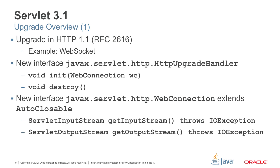Let's take a look at the second category of features, namely upgrade. Upgrade is something defined much earlier in HTTP 1.1, and the most famous example of upgrade is WebSocket. In Servlet 3.1, we provide a way so that you start from the web container and then can upgrade to a different protocol in a portable way.